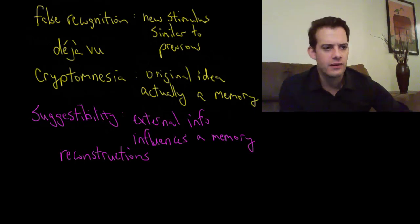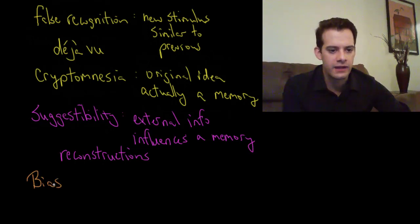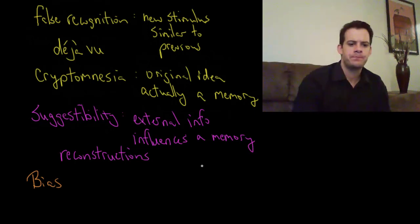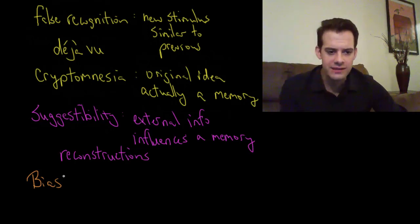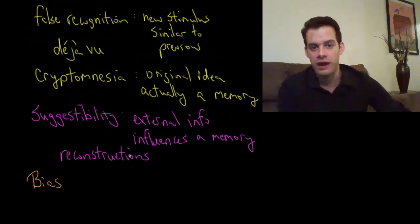Okay, so the next failure that we'll look at is bias. Our memory is biased and there's a number of different types of bias that can occur to our memory. So we won't go into all of these types but some of the types of bias that we see regularly in memory, one of them is egocentric bias.